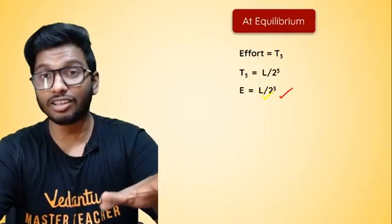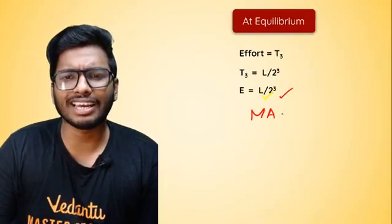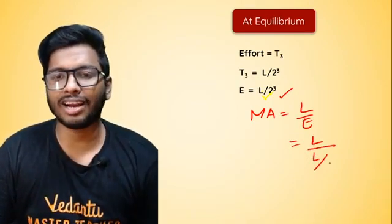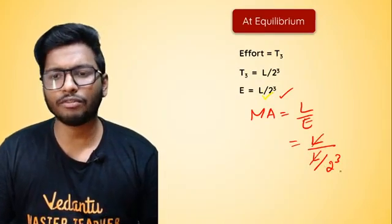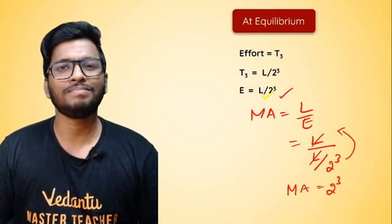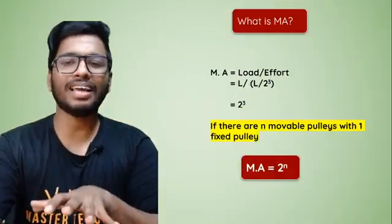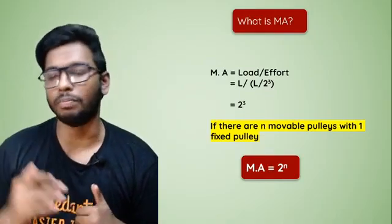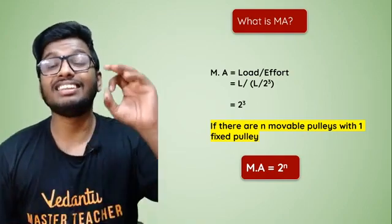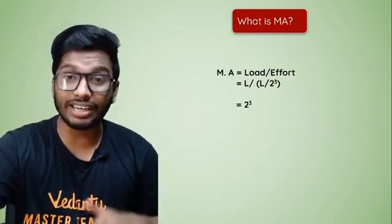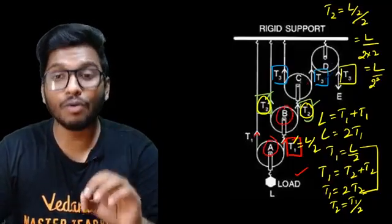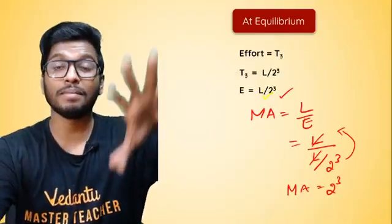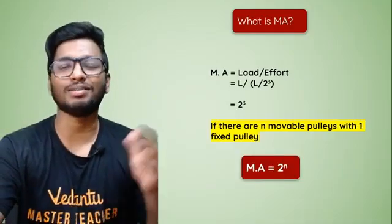Now to find the mechanical advantage: MA = Load / Effort = L / (L/2³). The L's cancel, giving MA = 2³. Replacing 3 with n, MA = 2^n. In a single fixed and other movable pulley system, the mechanical advantage is 2^n, where n is the number of movable pulleys. In this example there are three movable pulleys and we found MA = 2³, which confirms the formula.